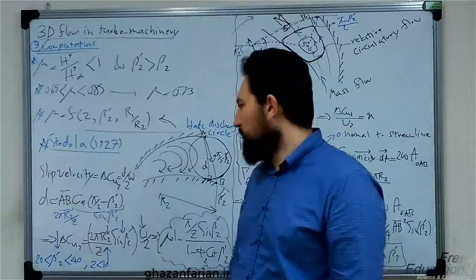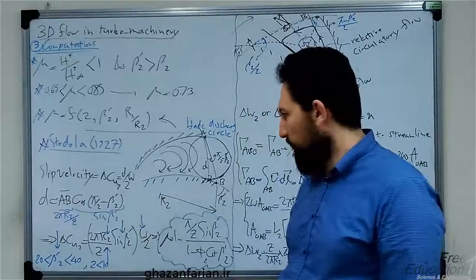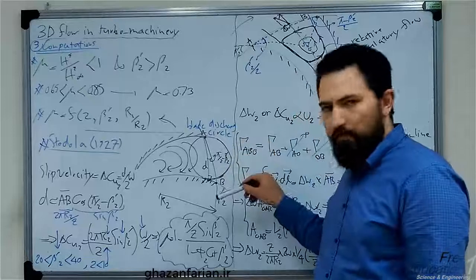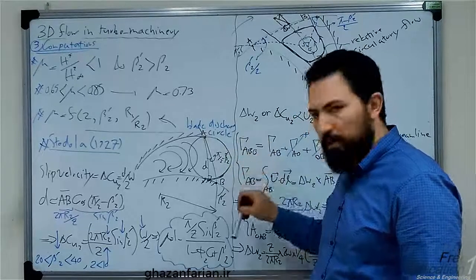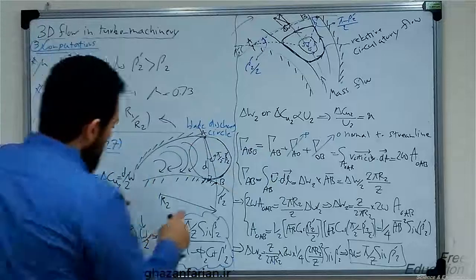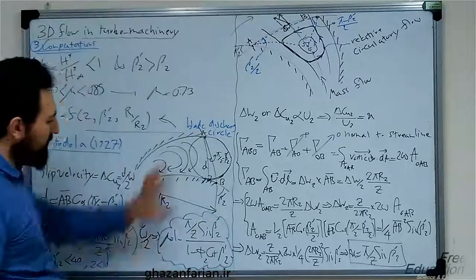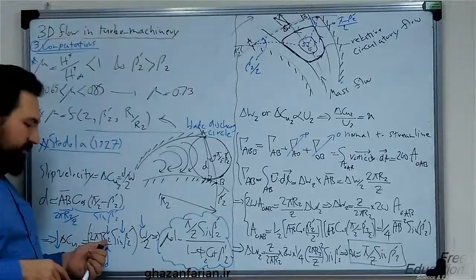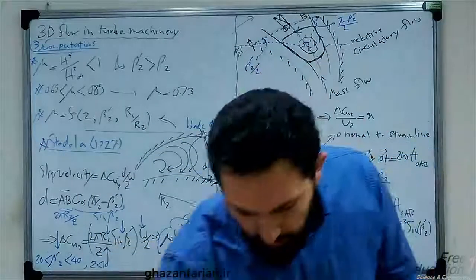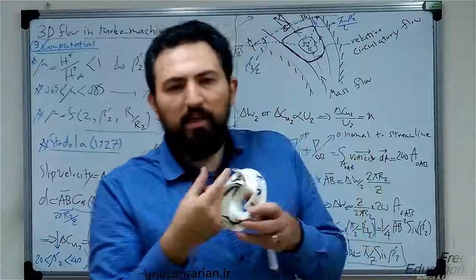In the slip velocity relation, d is an unknown parameter, so we approximate d as follows. The line AB is part of the circumferential circle of the pump. The radius at the outlet is R sub 2, so the length of this arc is 2 pi R sub 2 over z, where z is the number of blades. With five inter-blade spaces, AB is the length of one segment of the circle, equal to 2 pi R sub 2 over z.